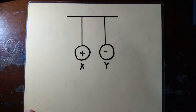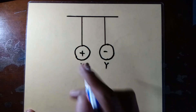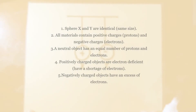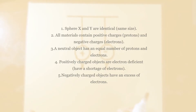The first thing we know is that the two spheres X and Y are the same size — they are identical. The second thing is that all materials contain positive charges called protons and also negative charges called electrons. The third thing is that when an object is neutral, it has the same number of electrons and protons.